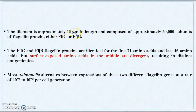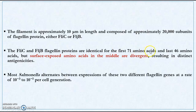Each filament is approximately 10 micrometres in length and composed of nearly 20,000 subunits of the flagellin protein — either of the type flagellin C or flagellin B. Any one flagellin protein only will make up the flagellum in a particular bacterium. Flagellin C and flagellin B proteins are identical in their first 71 amino acids and also in the last 46 amino acids. The divergence is in the middle of the amino acid sequence, which results in distinct antigenicities.